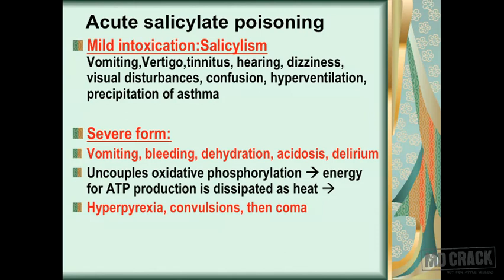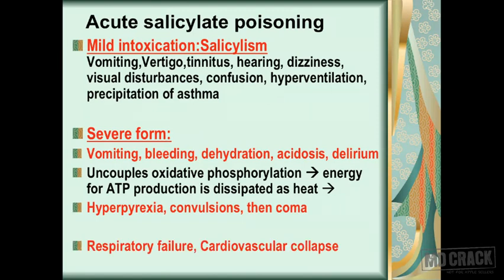This is similar to another agent discussed in the autonomic nervous system — a cholinergic blocking agent, atropine — which also produces hyperpyrexia, convulsions, and coma in overdose. So when it comes to hyperpyrexia, convulsions, and coma, remember two poisonings: atropine overdose and salicylate poisoning. Finally, the patient will get respiratory failure and cardiovascular collapse — those are the manifestations of acute salicylate poisoning.